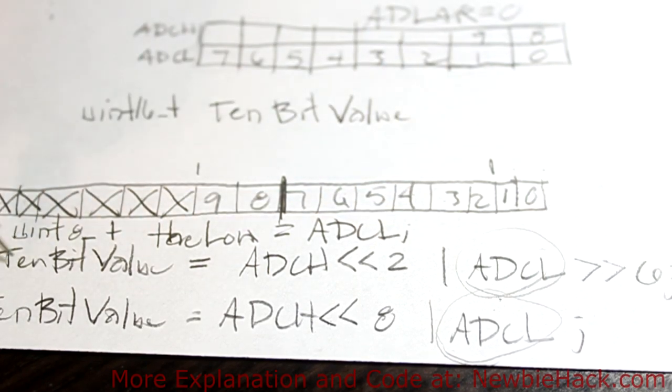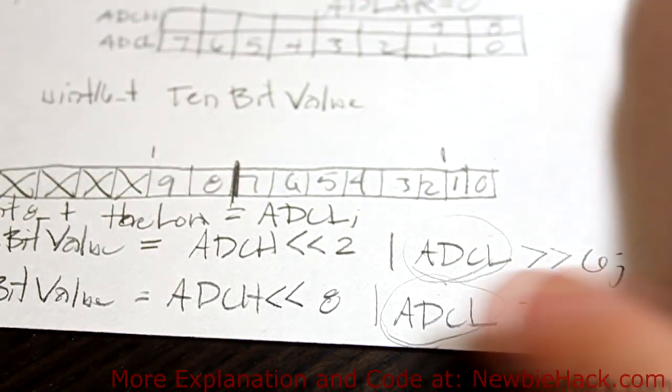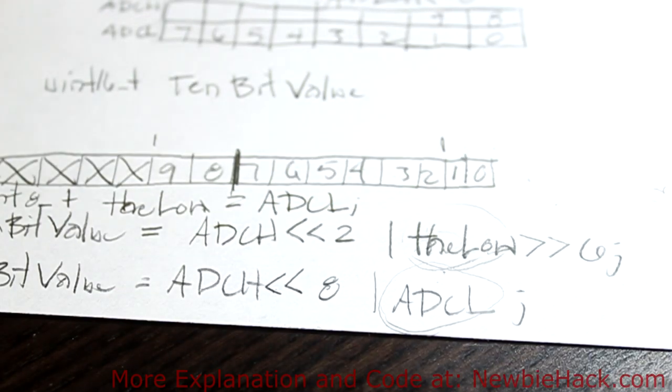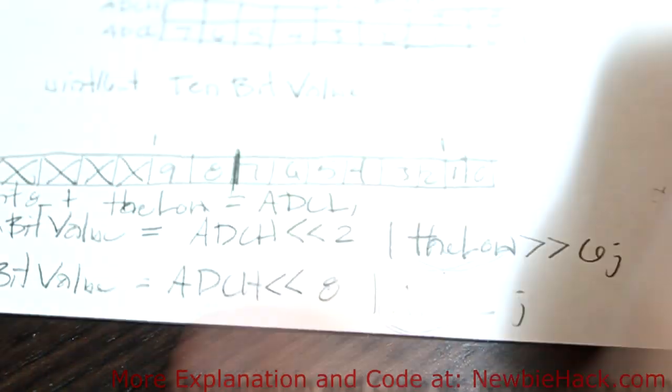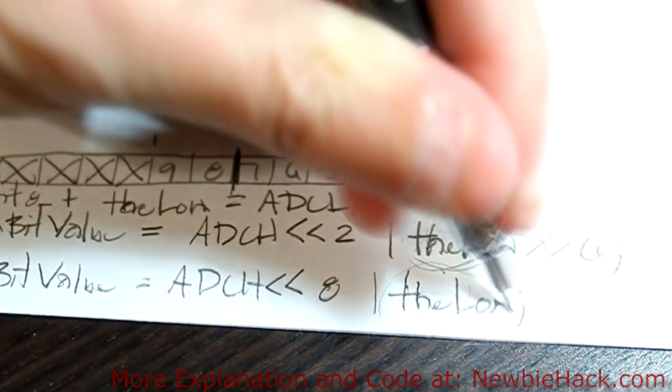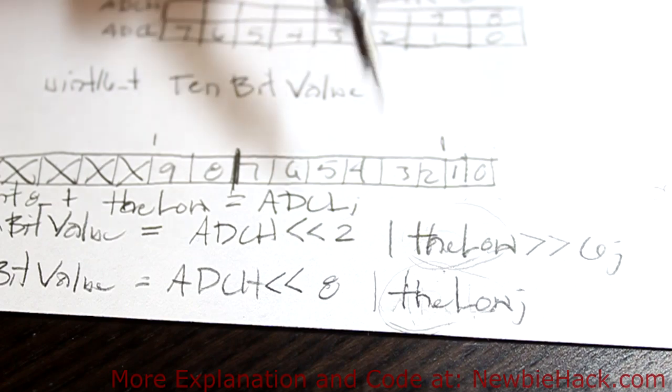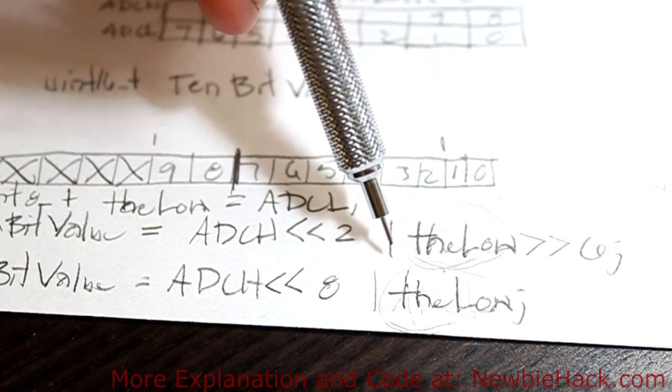And then if we were going to do the top one, we would just, instead of putting ADCL in here, we would just put the low. And if we were going to do the bottom one, we'd do the same thing. We'd just replace the ADCL with the low. And now what we're doing is we're accessing the ADCL first, and then we access the ADCH. And the compiler and the microcontroller will be happy.